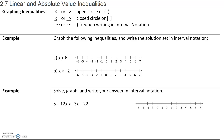In this section, we will talk about linear and absolute value inequalities. When our inequality is a less than or a greater than, we will use an open circle or a parentheses to indicate that the number is not included. When our inequality is a less than or equal to or greater than or equal to, we will use a closed circle or a bracket to indicate the number is included. Negative infinity and infinity are always written using parentheses when writing interval notation.